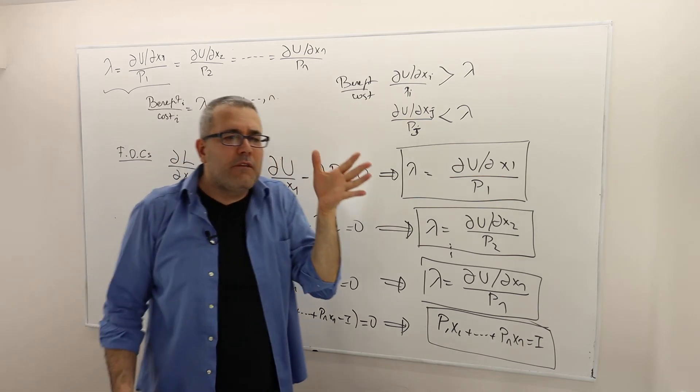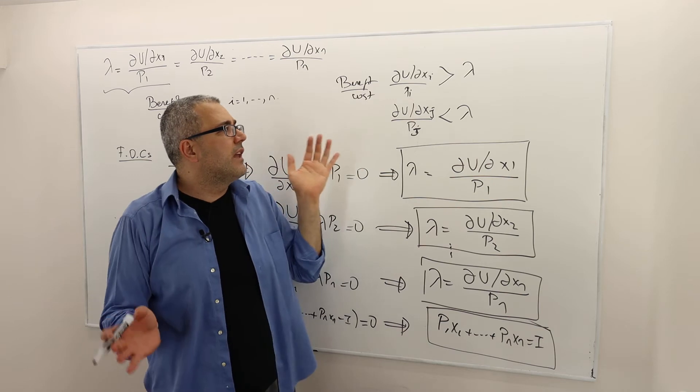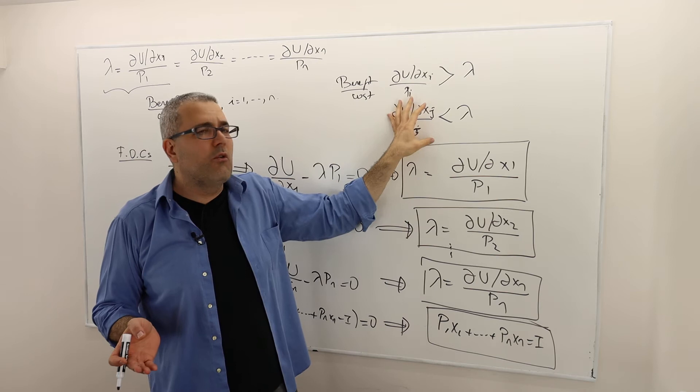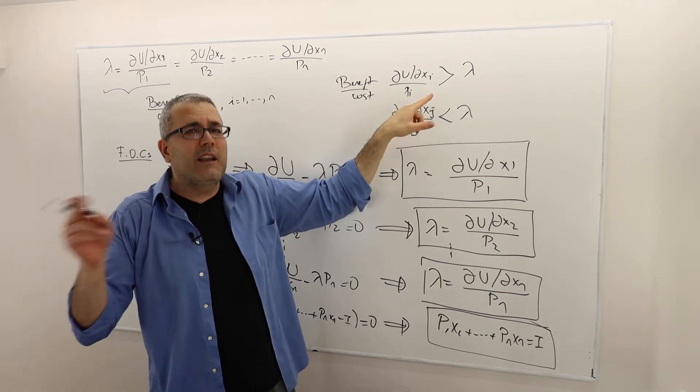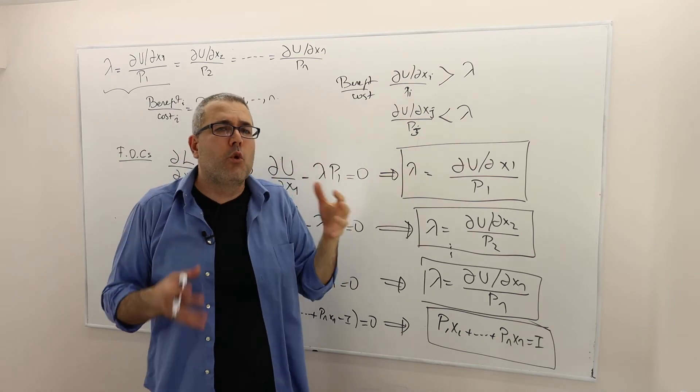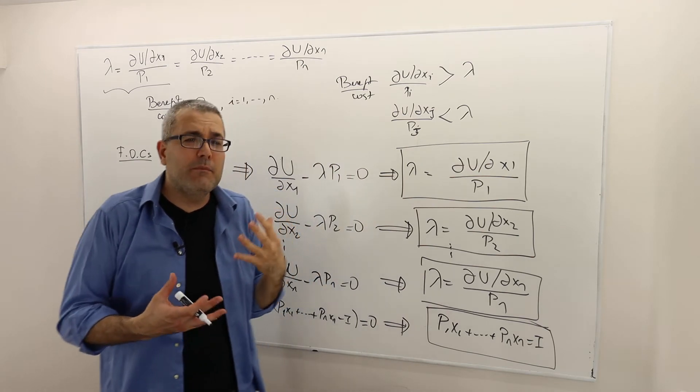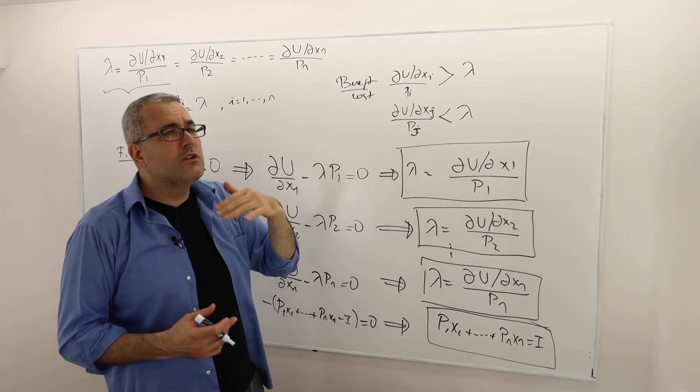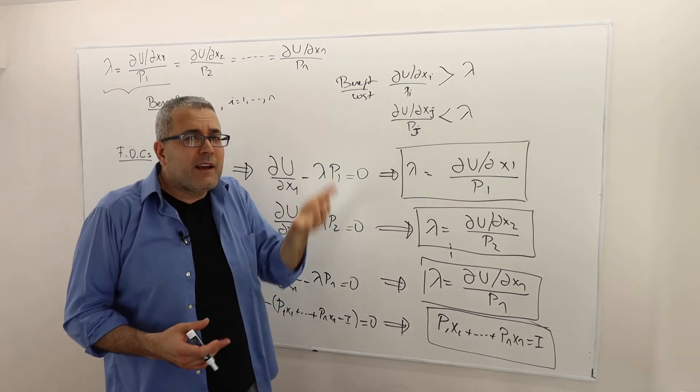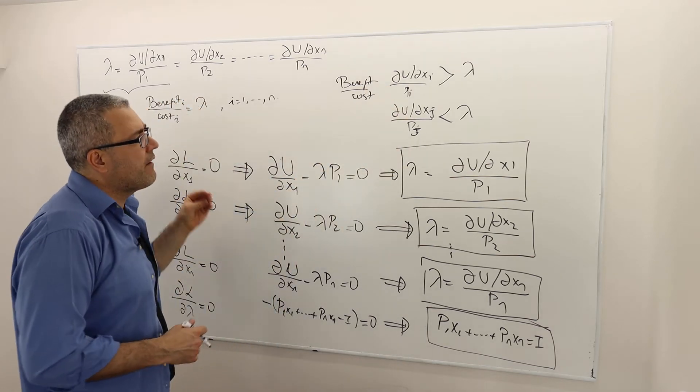The benefit cost ratio is greater than lambda here and less than lambda there. So basically that means if I spend less money on good j and instead spend that extra money on good i, I am going to benefit much more than the saving that I made from good j. So therefore, that means if something like this happens, there is room for improvement, meaning I'm not maximizing the utility function. So it has to be equal to lambda for every one of them.